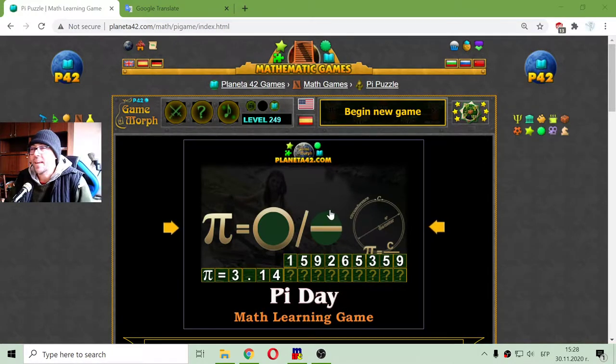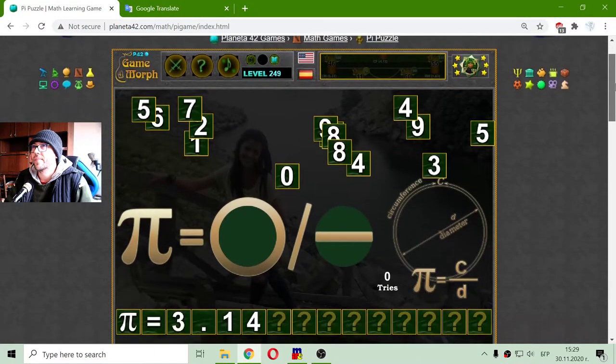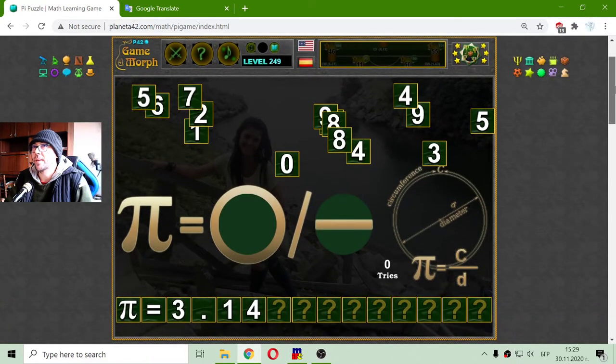Today's educational game that I play is a short math puzzle about the Pi number. Now, in general, the Pi number equals 3.14, but there are at least 2, 4, 8, 9 numbers after the 14.